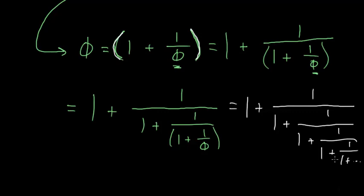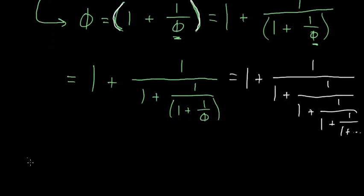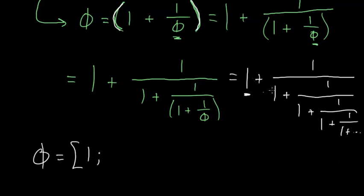Phi is an irrational number, so this is an infinitely long continued fraction. We can write this as phi equals 1 semicolon — since 1 is the first number out in front — and then the next numbers, each separated by commas, are all 1s in the case of phi.